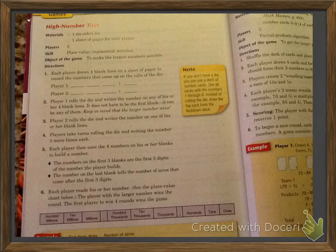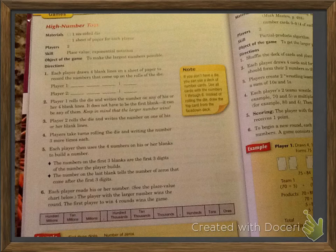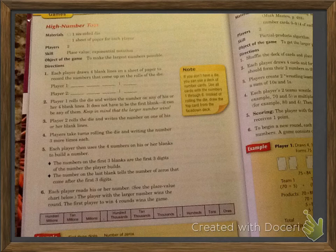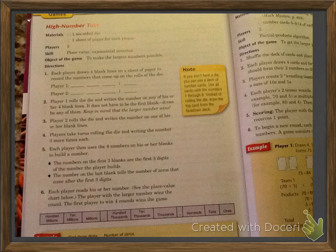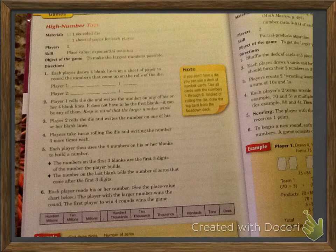The numbers on the first three blanks are the first three digits of the number the player builds. The number on the last blank tells the number of zeros that come after the first three digits. So each player reads his or her number, and they look at the place value chart, and the player with the larger number wins the round. The first player to win four rounds will win the game.